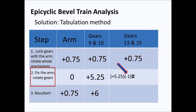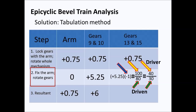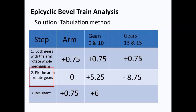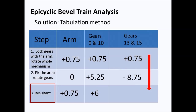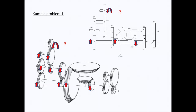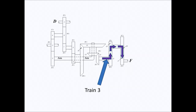For gears 13 and 15, the negative 1 factor is derived from the directional arrows being in opposite directions. We multiply by the number of teeth of the driver gears over the number of teeth of the driven gears. This gives a value of negative 8.75 for gears 13 and 15, and when added to 0.75, the resultant is negative 8 for that particular bevel gear.